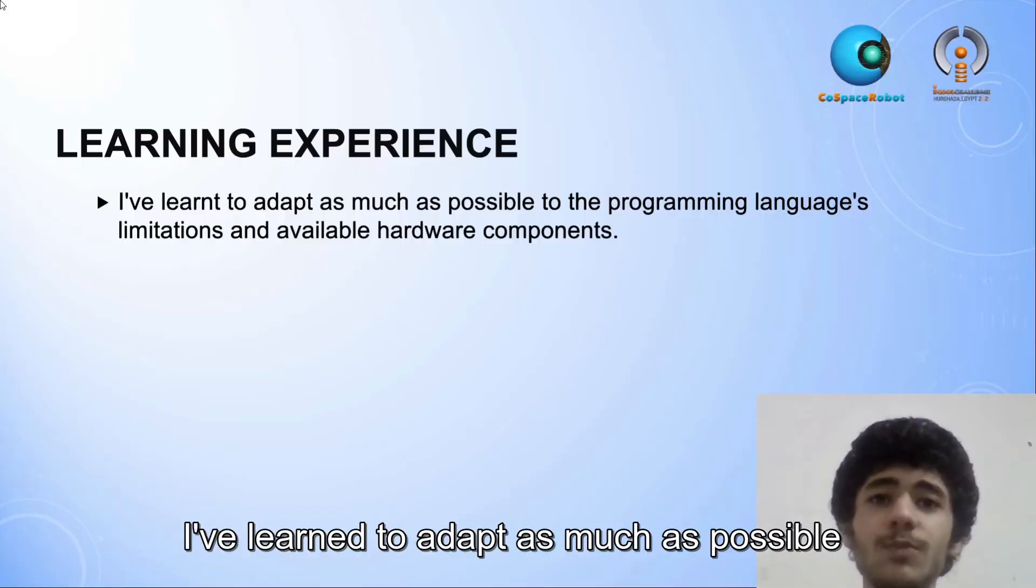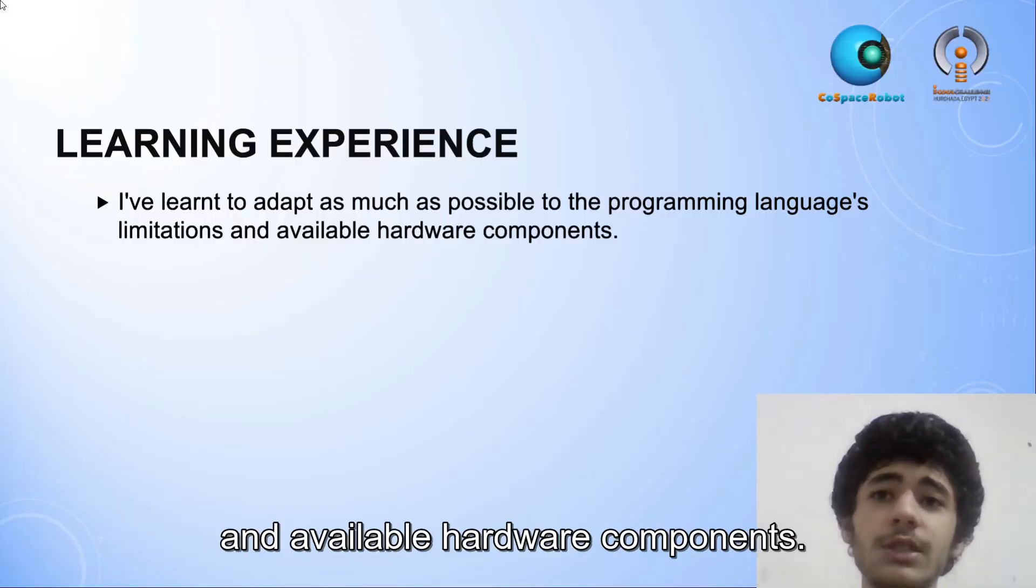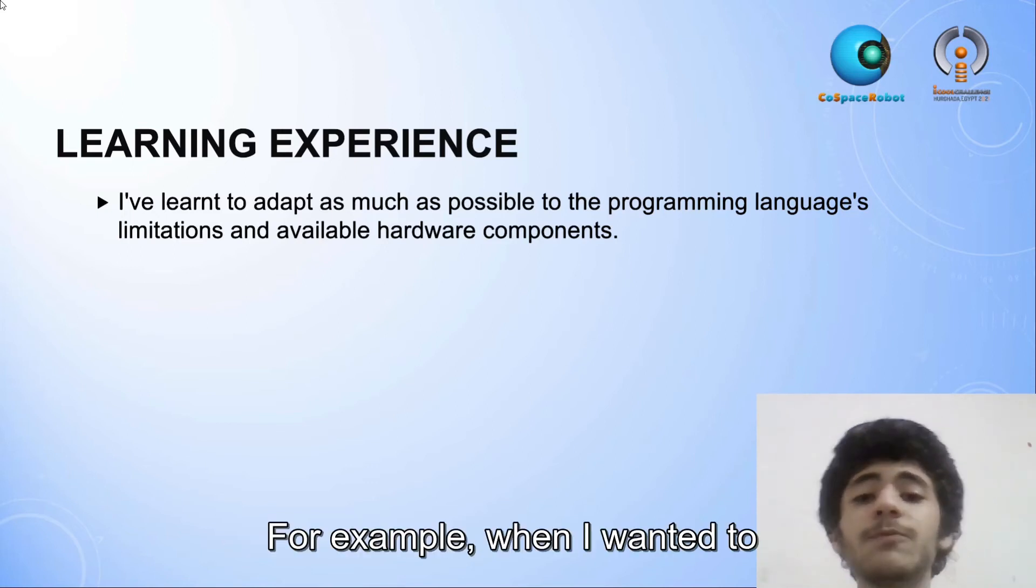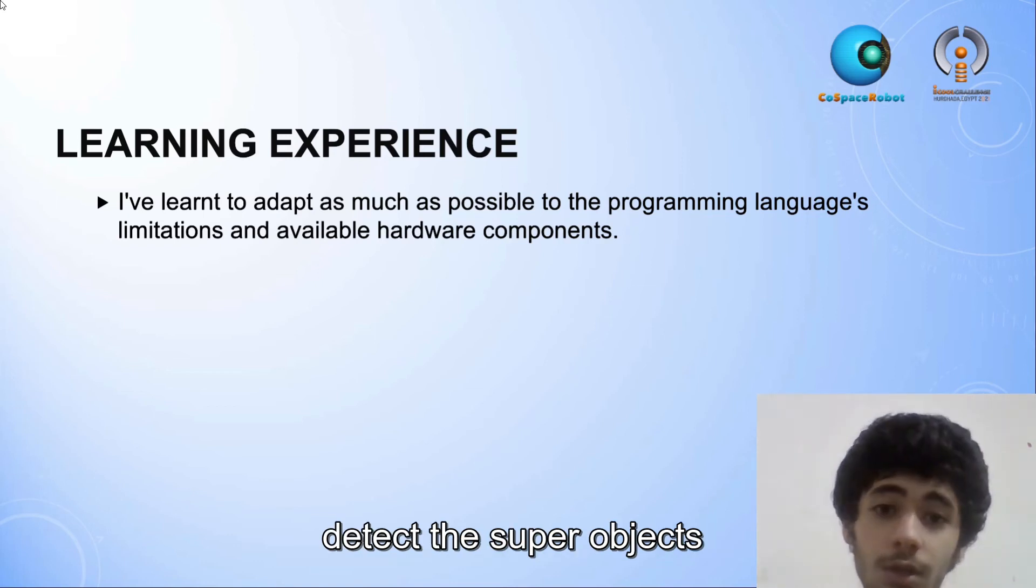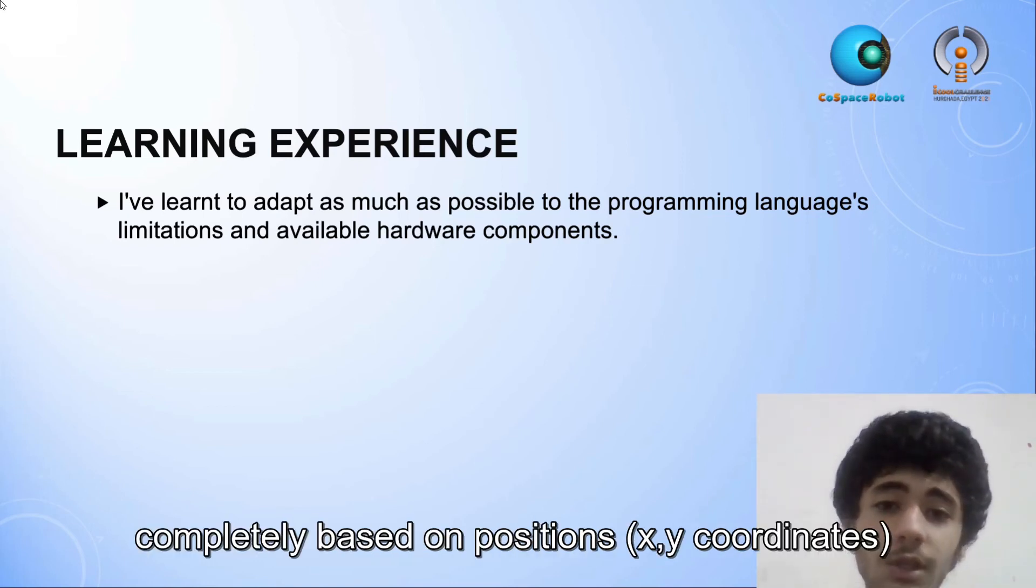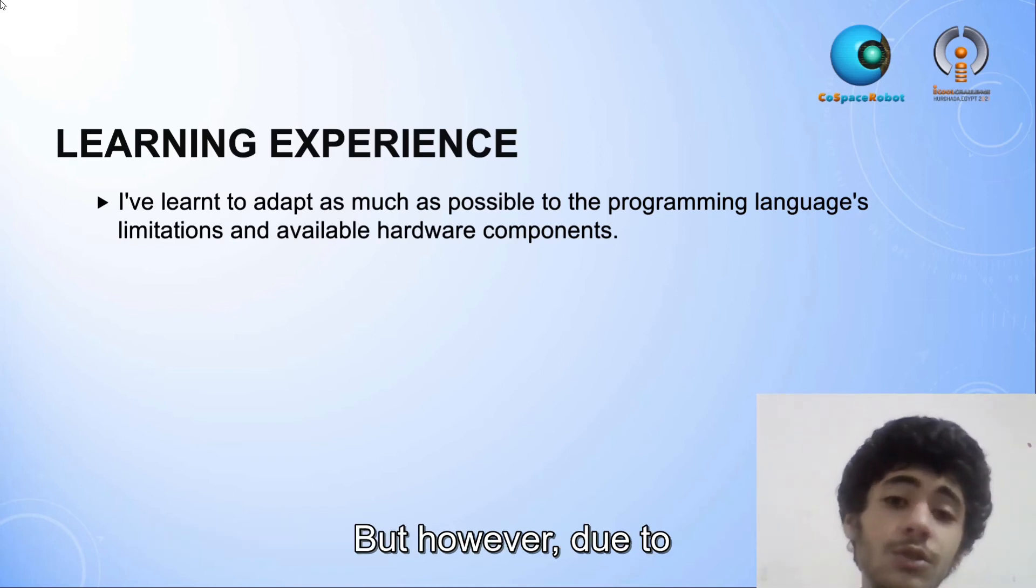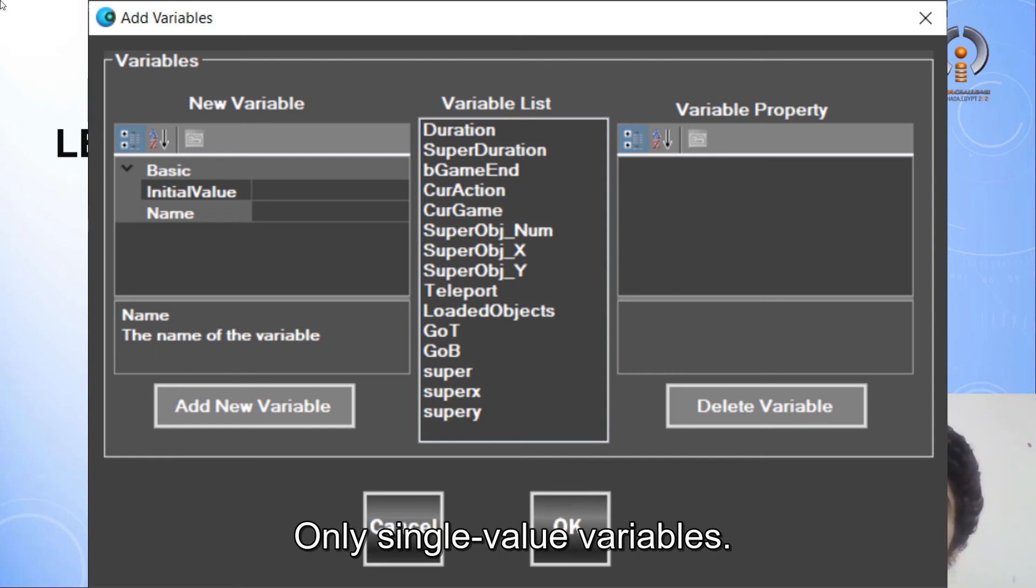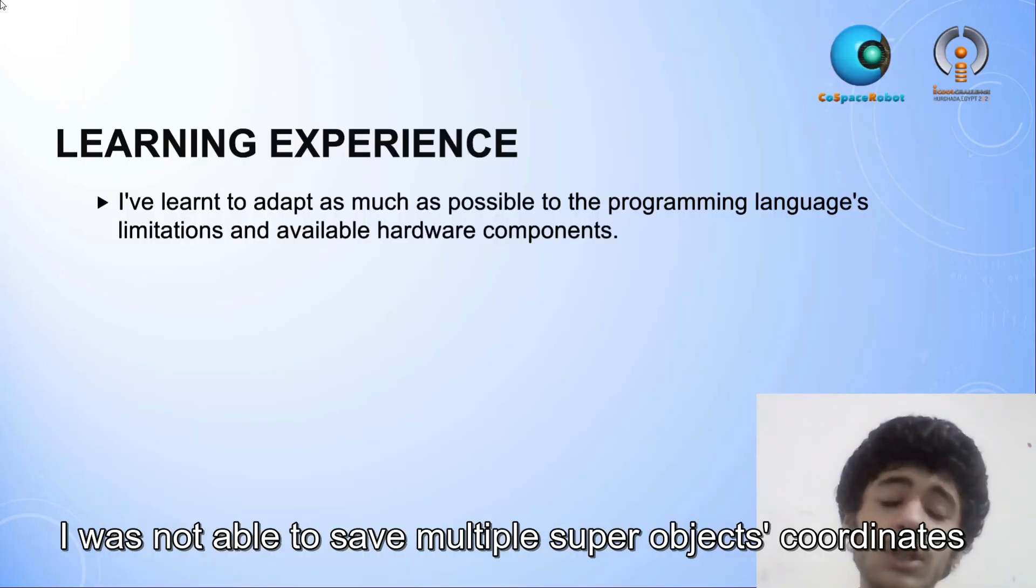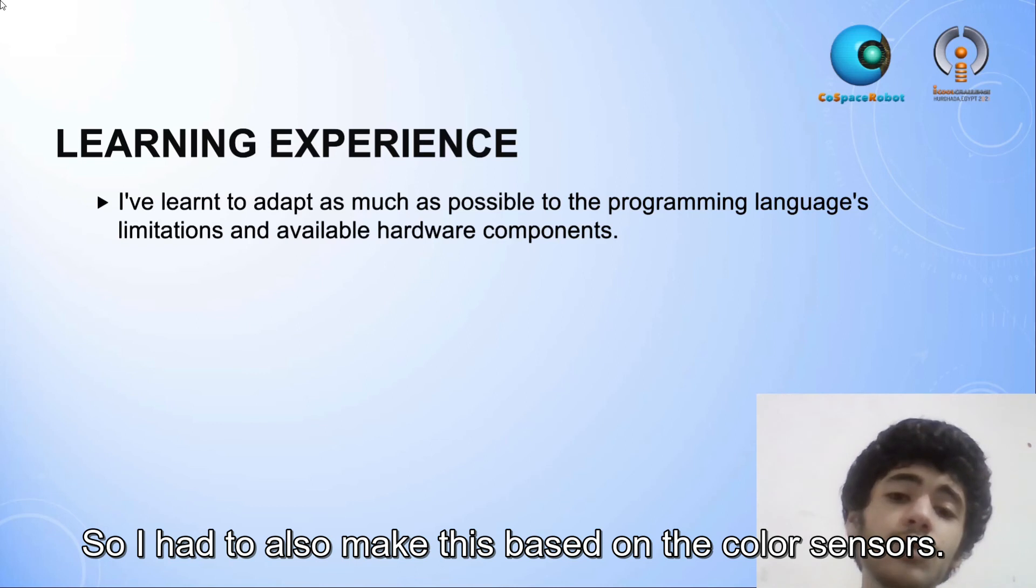I've learned to adapt as much as possible to the programming language's limitations and available hardware components. For example, when I wanted to collect super objects, I wanted to make the robot detect the super objects completely based on positions, but however, due to that the program did not allow me to create arrays, only single value variables. I was not able to save multiple super objects coordinates at the same time, so I had to also make this based on the color sensors.